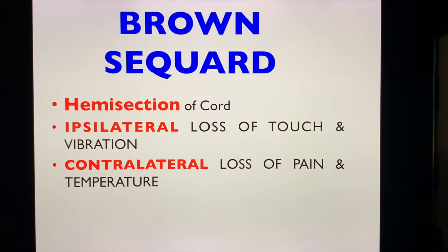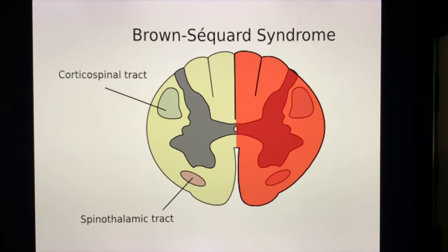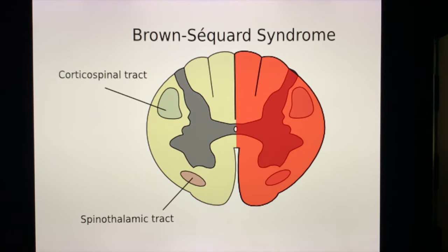Brown-Séquard syndrome is also known as hemi-section of the cord. Several references also refer to it as Brown-Séquard's hemi-section or Brown-Séquard's paralysis. Physical examination findings you must bring to the exams: in Brown-Séquard syndrome, there is ipsilateral loss of touch and vibration, and contralateral loss of pain and temperature. The two important tracts involved are the corticospinal tract and the spinothalamic tract — corticospinal for motor, and spinothalamic for pain and temperature.